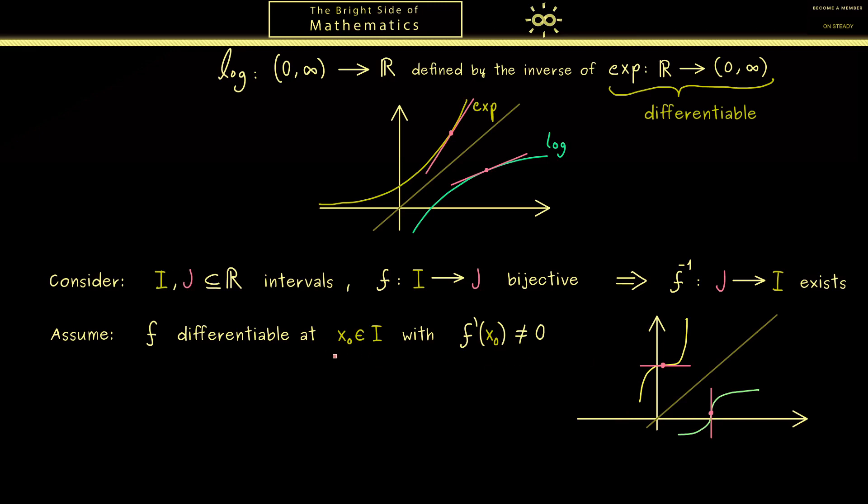Now when we fix such a point x0 we can map it to J and then look at the inverse function at this point. Hence let's simply call this point y0.